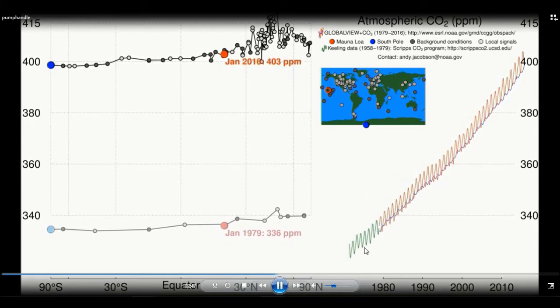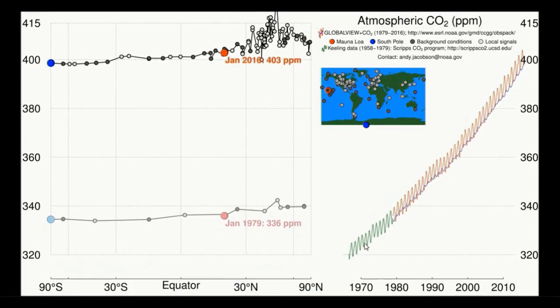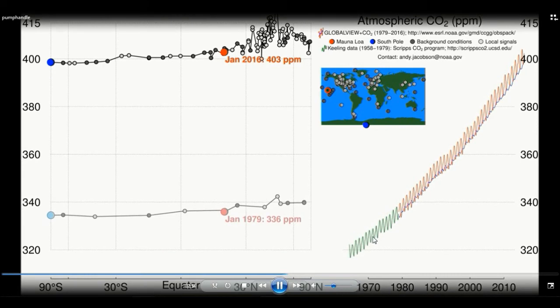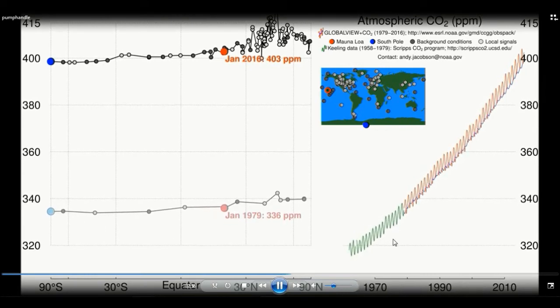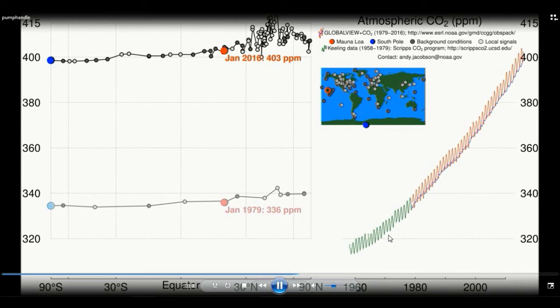This green line here are also measurements made at the Mauna Loa site in Hawaii. They are in the same location as the red wave but it's on a slightly different calibration scale which is why it's represented by a different color.